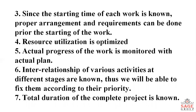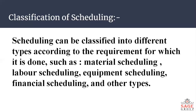The interrelationship of various activities at different stages is known, allowing us to fix priorities accordingly. The total duration of the complete project is known. Construction scheduling can be classified into different types according to requirement: material scheduling, labor scheduling, equipment scheduling, financial scheduling, and other types.